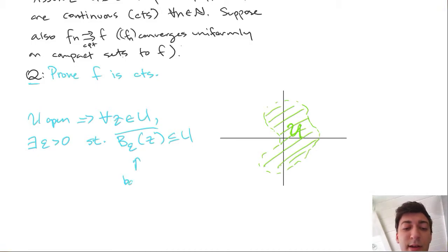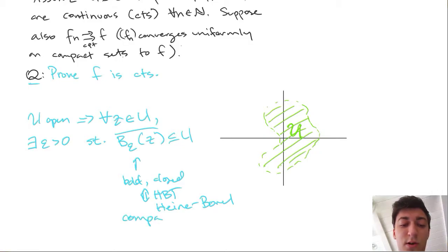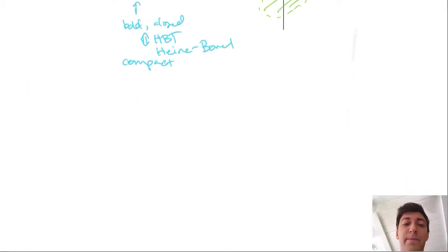So here's the nice thing, this is bounded, this is closed, and that means by the Heine-Borel theorem that this is also compact. Okay, so we've gone ahead and we found a compact subset for our Fn's to be on, and we can find one for any such Z in U.